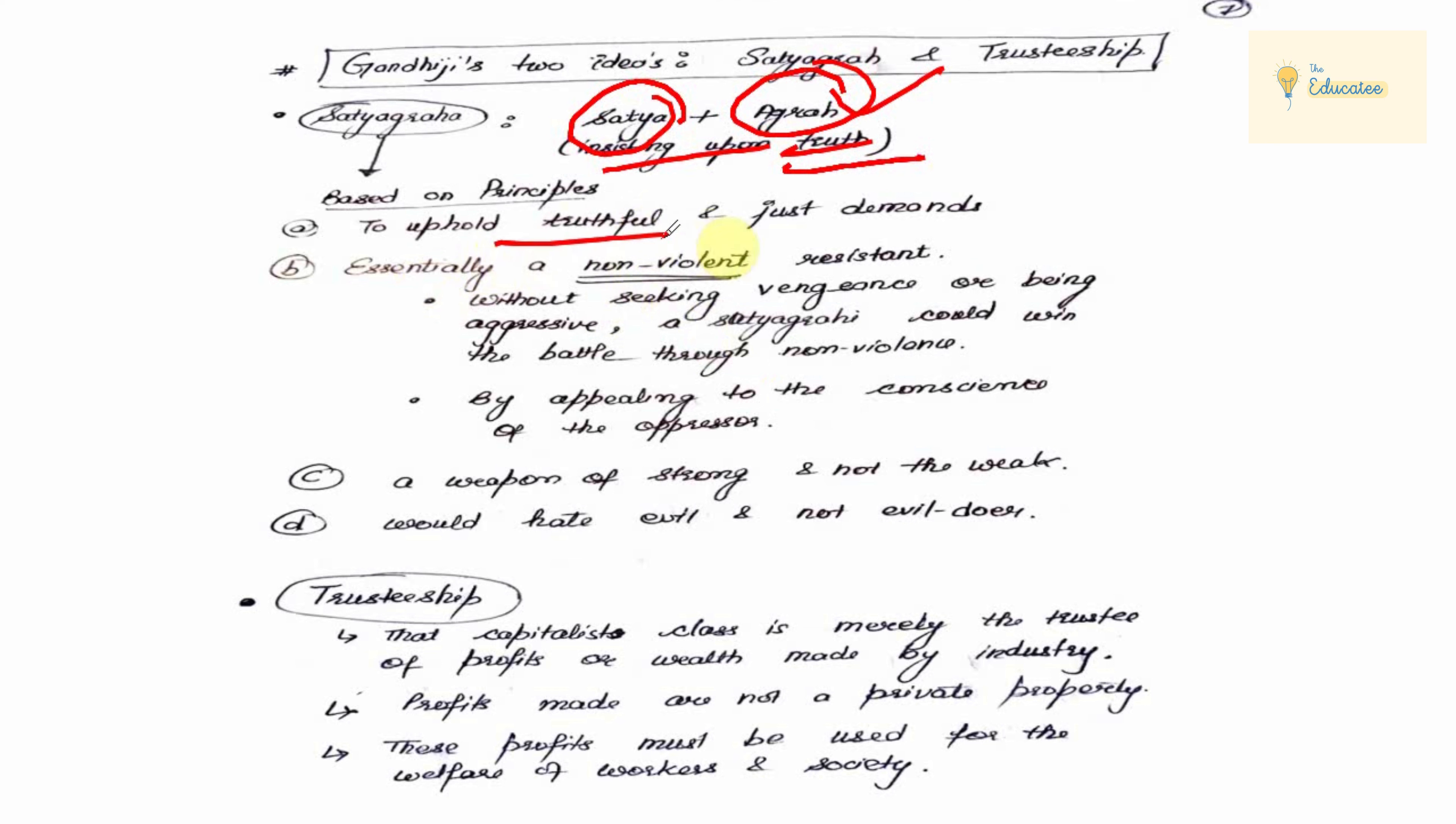First of all, to uphold truthful and just demands. If you are in the Satyagraha, the demands should be just and truthful demands. Such as workers, their demands were to increase their wages. You need just demand for Satyagraha which you are doing. Second, the most important element of Satyagraha is non-violent, Ahimsa.